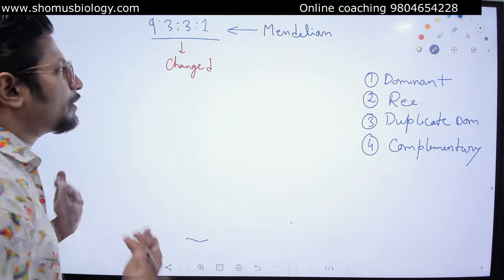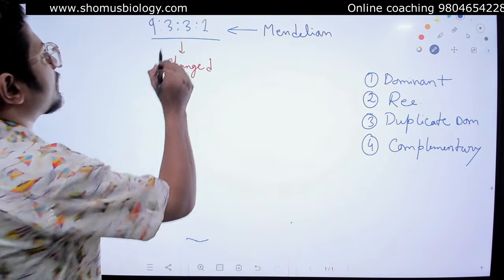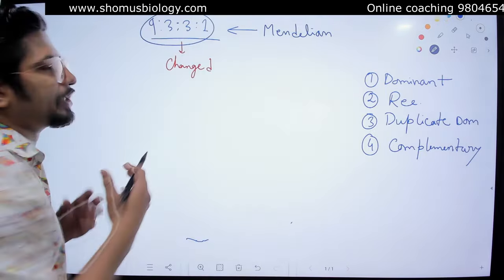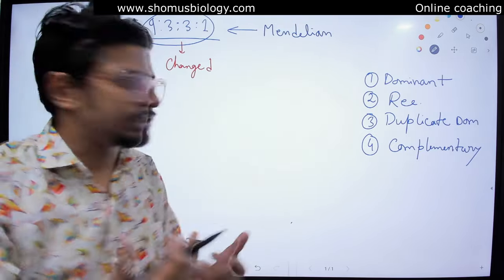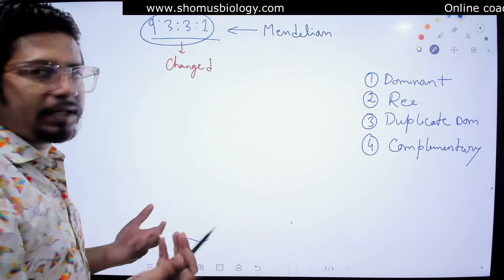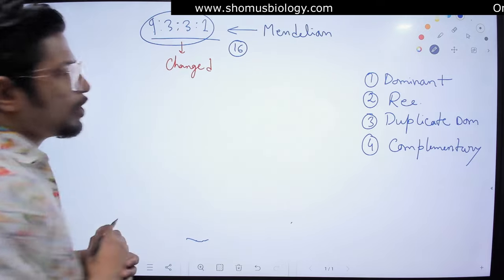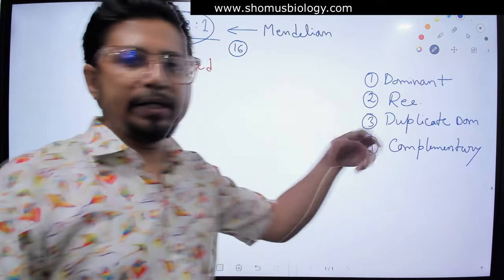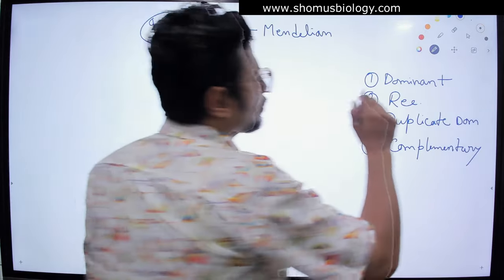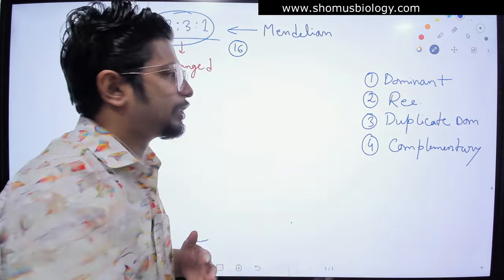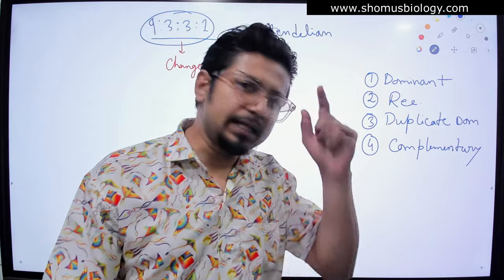Try to understand one thing: the Mendelian ratio will not remain the same in epistasis — it varies. We are checking among 9+3+3+1 = 16 individuals. So whatever frequency you get for all types of epistasis, the ratios must add up to 16. Just keep this in mind.